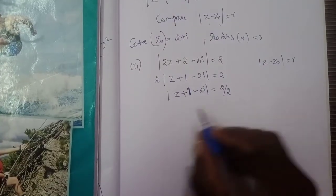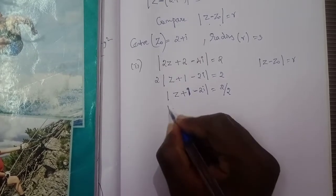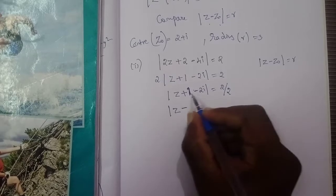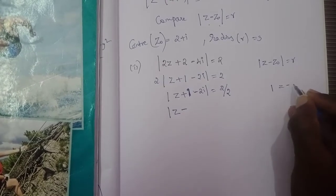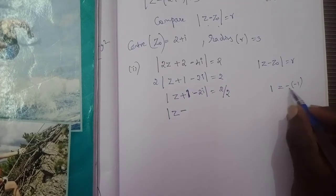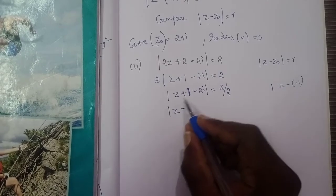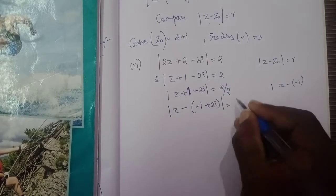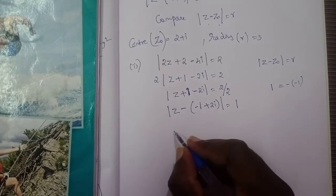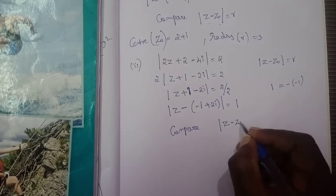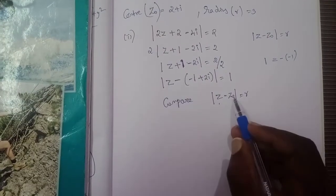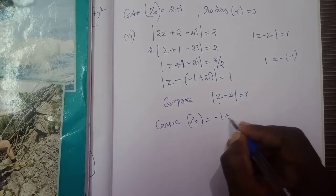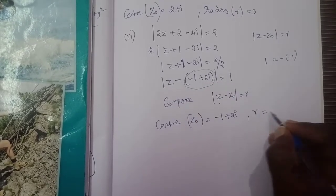So modulus of z minus z₀ equals 1. Comparing with the standard form modulus of z minus z₀ equal to r, center z₀ is equal to minus 1 plus 2i. This is the center. Radius r is equal to 1.